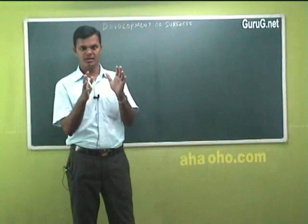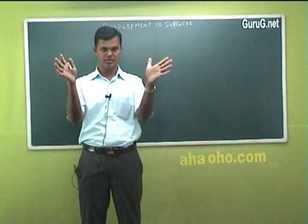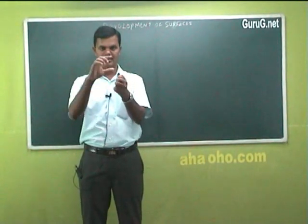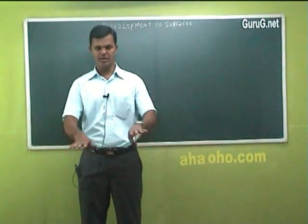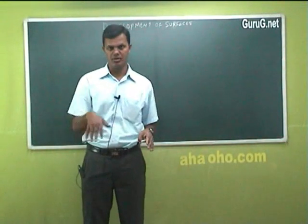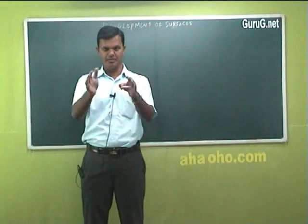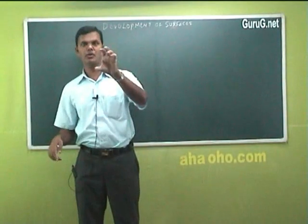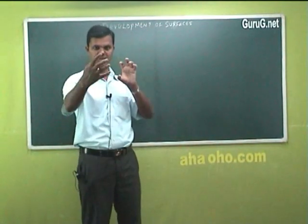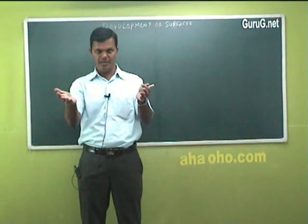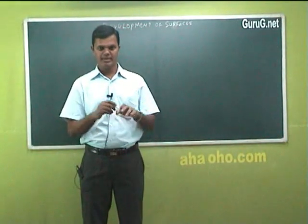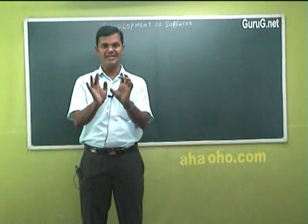Consider a box — say, a rectangular biscuit box. Keep in mind the wrapper or cover of the box. If you open it and place it on a floor or a table, you can see the edges or the total shape of the box in that paper. A rectangular biscuit box is nothing but a square prism — the front view is a square and the back side is also a square, and you have side faces. That particular shape is called the development of that surface.